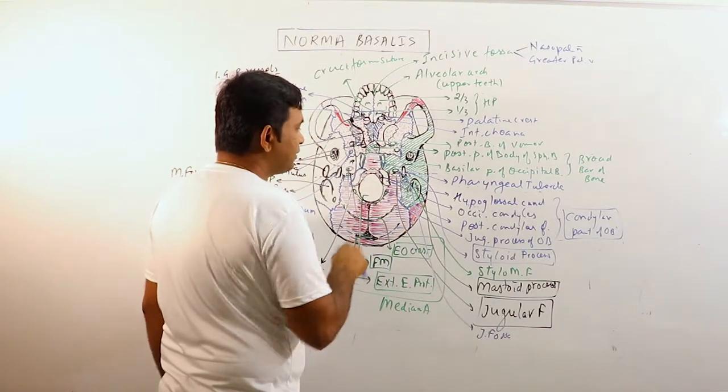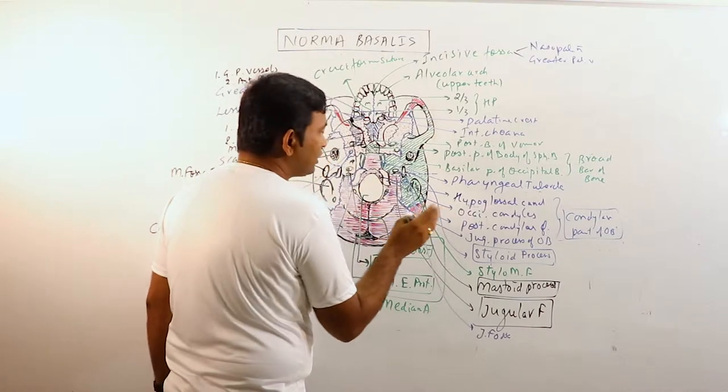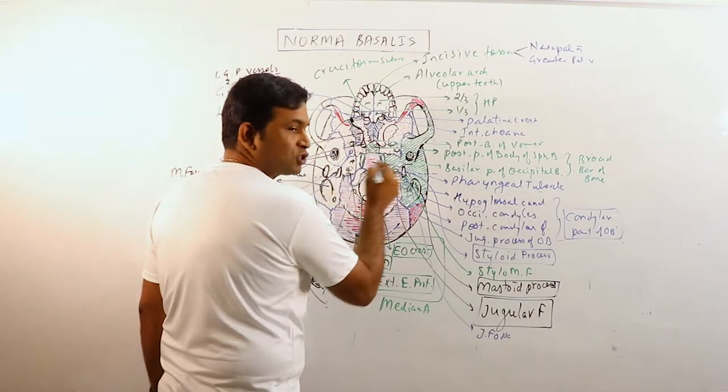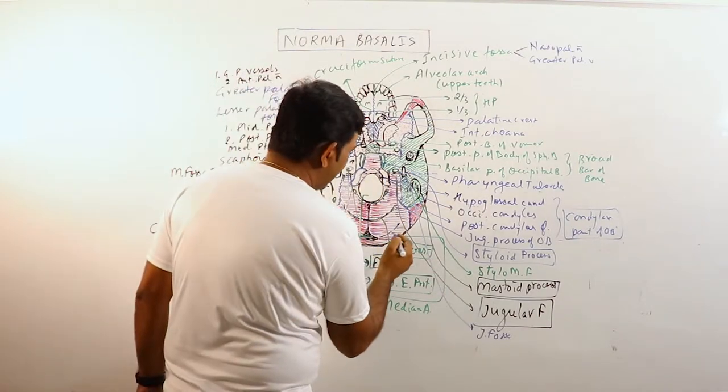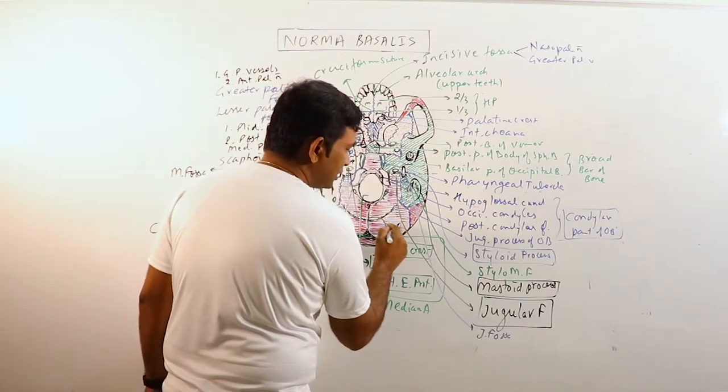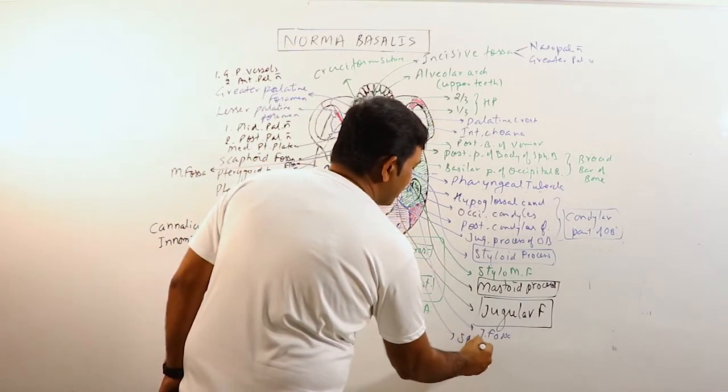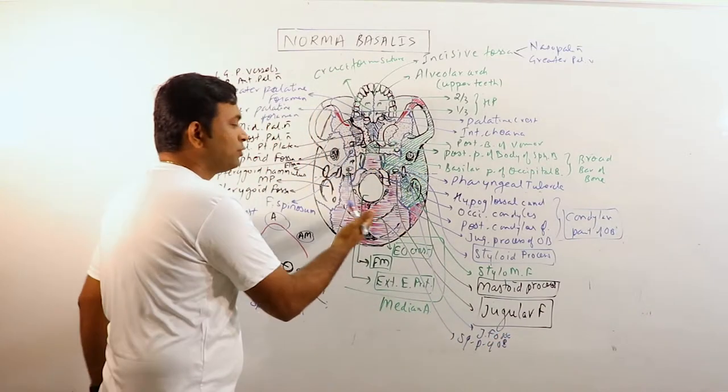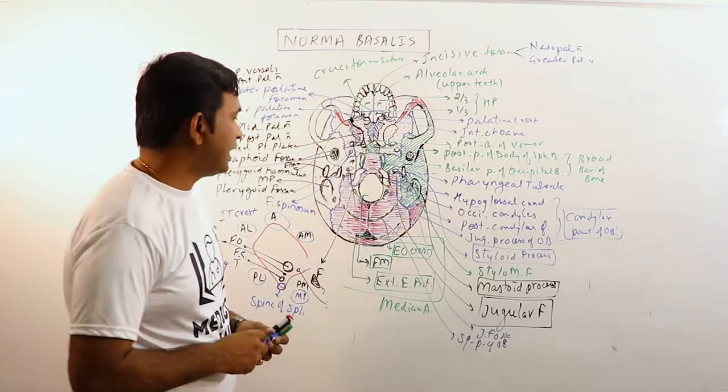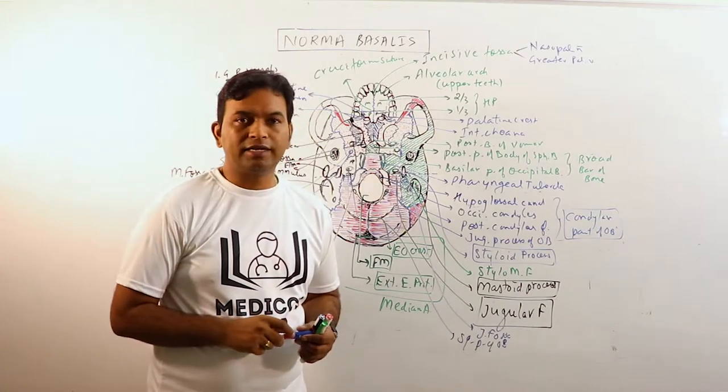Jugular foramen is basically placed in the lateral part of the occipitomastoid suture. And this region is basically the squamous part of occipital bone which is characterized by the presence of superior and inferior nuchal lines.